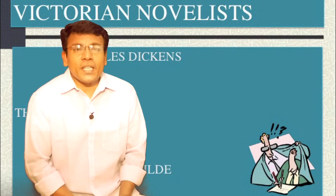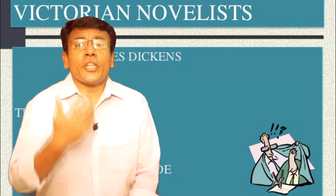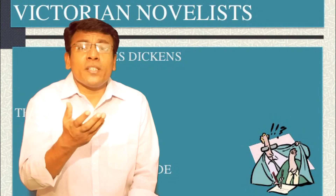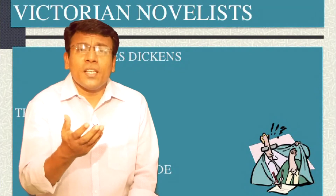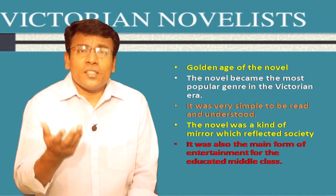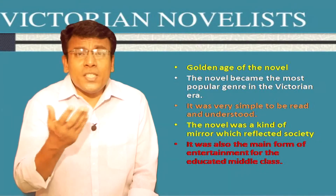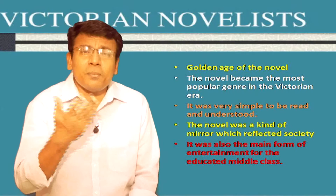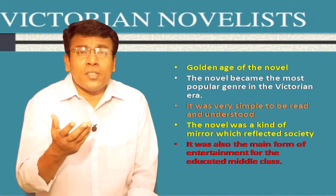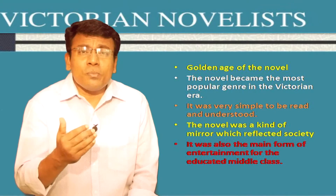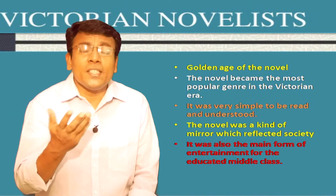Today we shall begin our discussion of the Victorian novel. The Victorian period was considered the golden age of the novel — it was the most dominating literary form of the age and the most popular genre of the Victorian era. The novel was easier to read and understand than poetry or drama, being simple to read and easy to understand. That was the basis of its popularity.